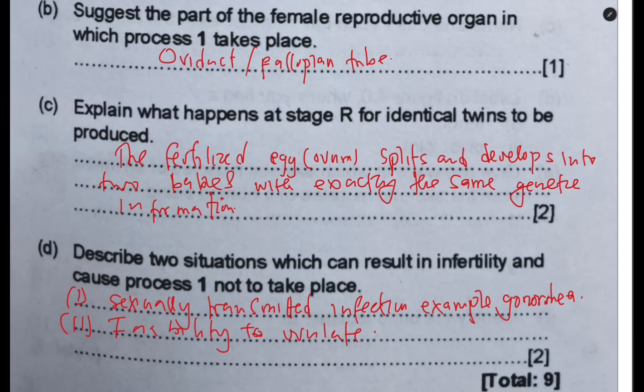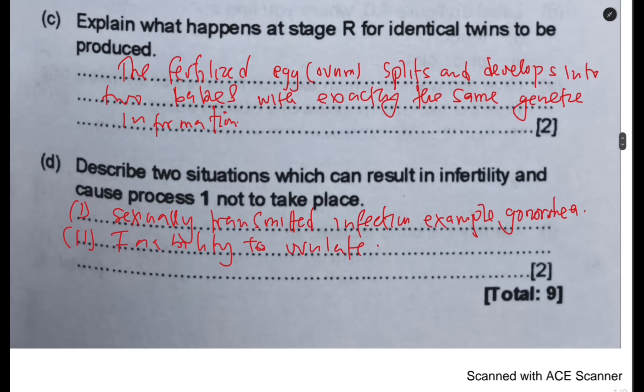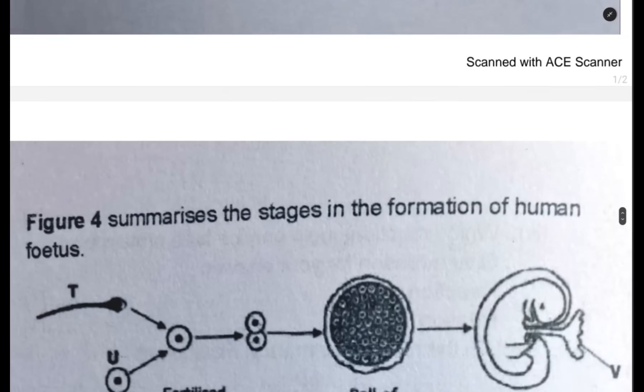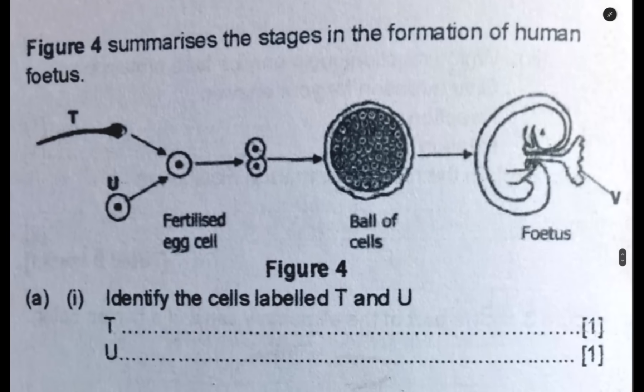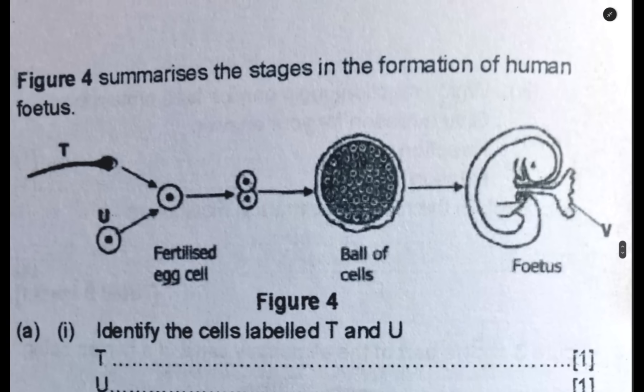There are quite a number of answers — please type in your answers so we can all learn from you and make this interactive. Don't feel scared; give the answer so we can know if it is correct or wrong. Here is the second question: Figure 4 summarizes the stages in the formation of the human fetus.